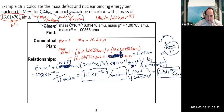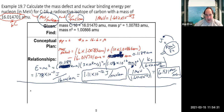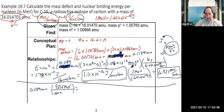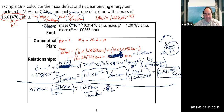An alternative to using Einstein's equation is to use the conversion factor directly: 1 amu = 931.5 MeV. So 0.1189 × 931.5 = 110.8 MeV total. Dividing by 16 nucleons gives approximately 6.92 MeV per nucleon — very close to our earlier result. You can then use the MeV-to-joule conversion to get the joules per nucleon answer as well.